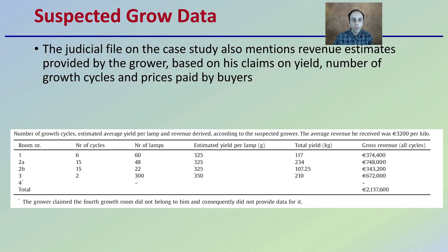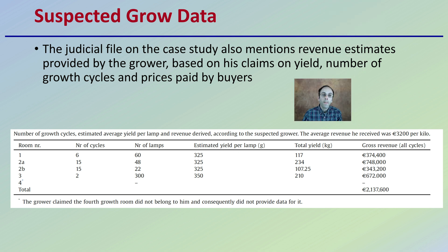So why is it so hard to look at all these suspected grows? The judicial file on the case study also mentions revenue estimates provided by the grower based on its claims on yield, number of growth cycles, and prices paid by the buyers. These are just more confounding data points that make it difficult to pinpoint or get an exact number.